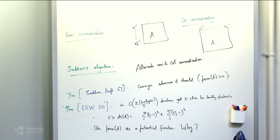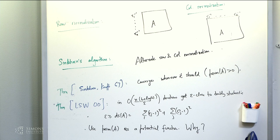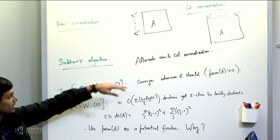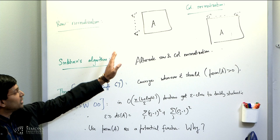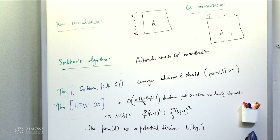The first primitive is row normalization: you multiply each row of A by the inverse of the row sum, so the i-th row is multiplied by R inverse. Then there's column normalization, where you multiply each column by the inverse of the column sums — the i-th column is multiplied by C inverse. Row normalization makes row sums one and column normalization makes column sums one, but they don't work well together simultaneously. Sinkhorn-Knopp suggested alternately fixing rows and columns — that's the Sinkhorn-Knopp algorithm.